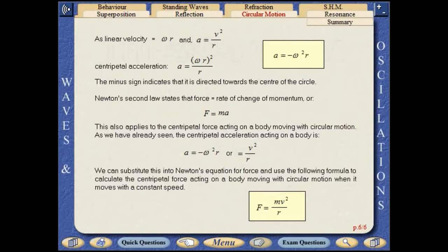This also applies to the centripetal force acting on a body moving with circular motion. As we have already seen, the centripetal acceleration acting on a body is a equals minus omega squared r, or v squared over r.